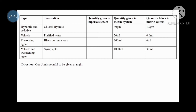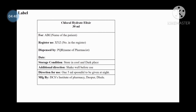Direction: one 5ml spoonful to be given at night. Label — Chloral Hydrate Elixir, 30ml. Patient name: ABC; Register number: XYZ; Dispensed by: Name of Pharmacist; Date: date of manufacturing; Storage condition: store in a cool and dark place. Additional directions: shake well before use. Direction for use: one 5ml spoonful to be given at night. Manufactured by DCS Institute of Pharmacy Devapur.